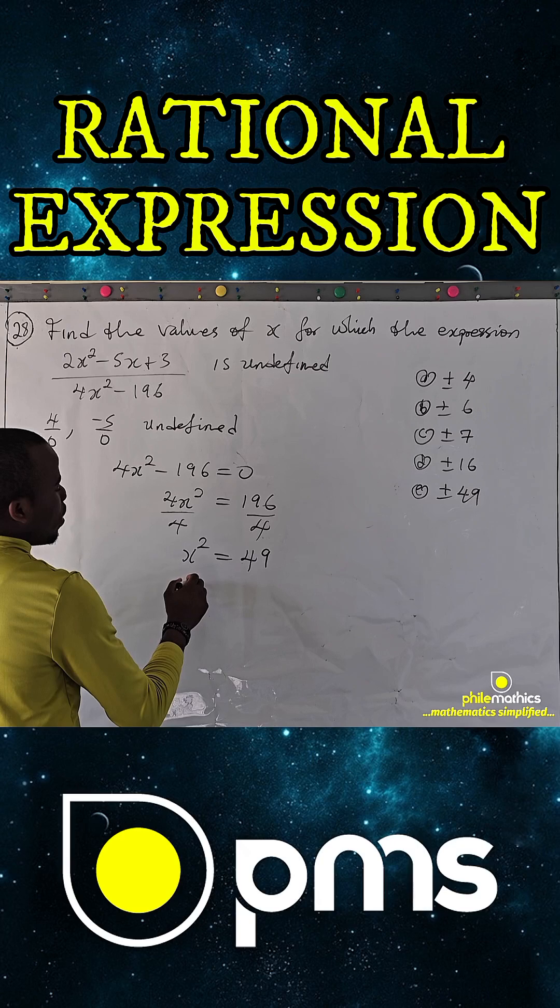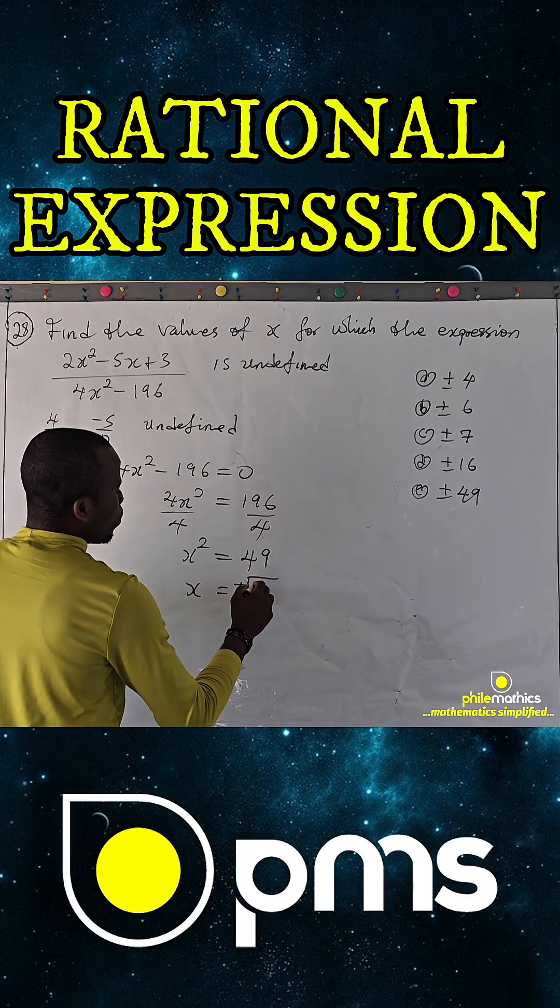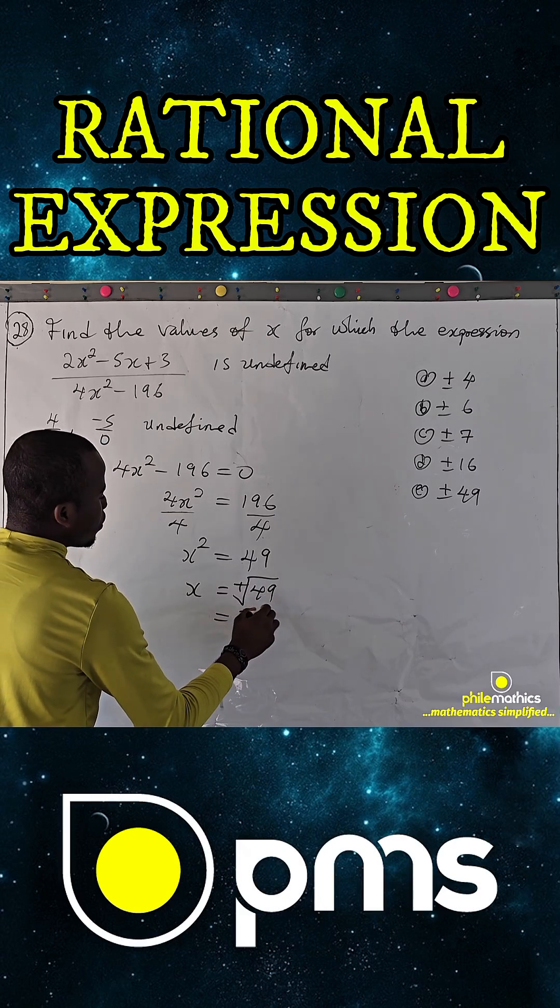And so, to find x is to take the square root of both sides, which is plus or minus square root of 49. And this is plus or minus 7.